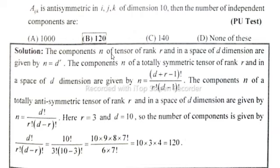Solution: The components n of tensors of rank r and in a space of dimensions are given by n is equal to d power r.